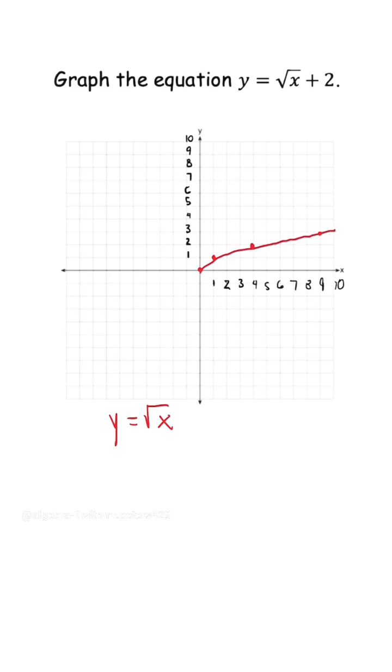So if we can remember these key points for the radical graph, we could graph it as a transformation where we shift each point up by 2. That is what the equation is telling us. So if I were to use the transformation, this is what the new graph is going to look like.